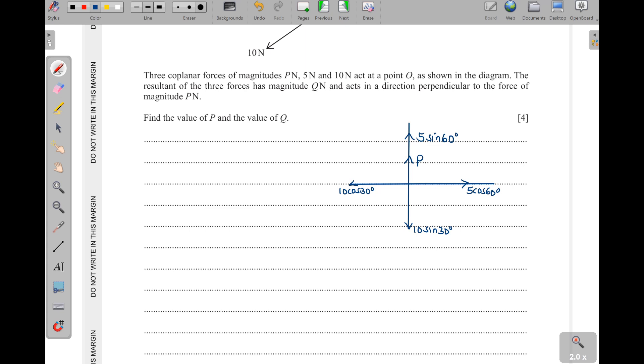Now from there, just like I've said, based on what they have given us here, that simply means that the resultant in Y is equal to zero. So the resultant in Y - we have these forces that are going up are equivalent to this force that is going down such that they cancel out. Now we shall have P plus 5 sine of 60 degrees, then this one will be equivalent to 10 sine of 30 degrees.